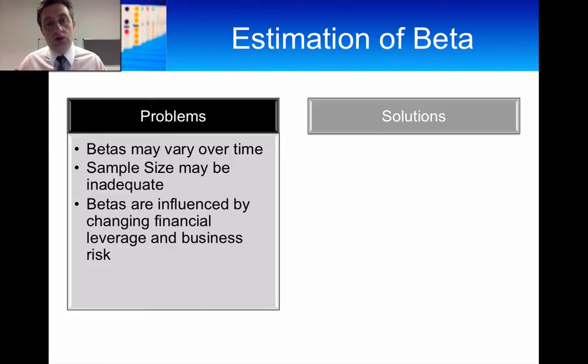Normally, you would use monthly data, so monthly returns data, over a period of about five years. That gives you 60 observations. 12 months times five years gives you 60 observations. That is enough of a sample size in order to undertake a regression analysis.